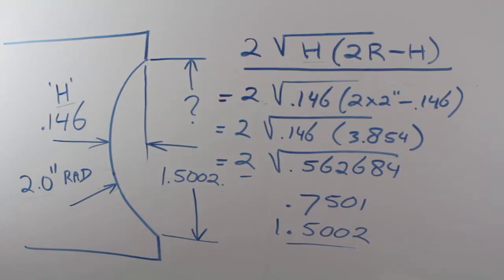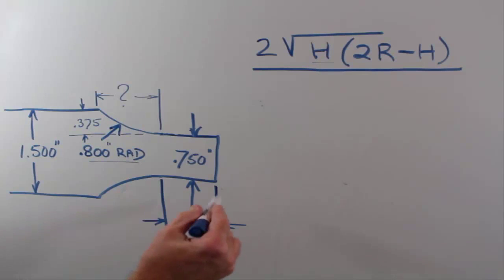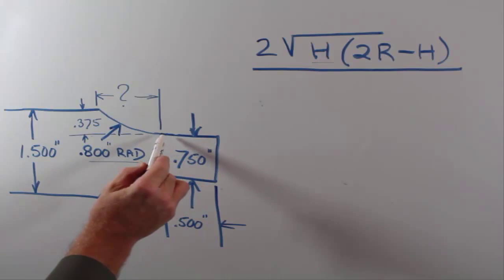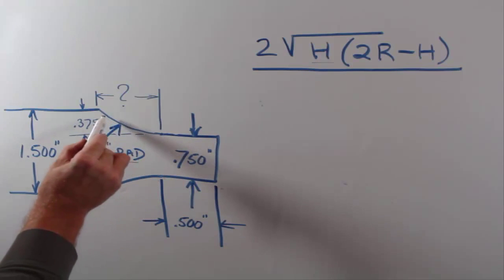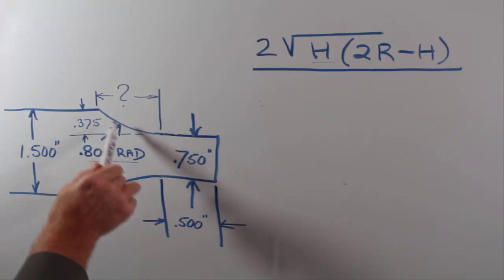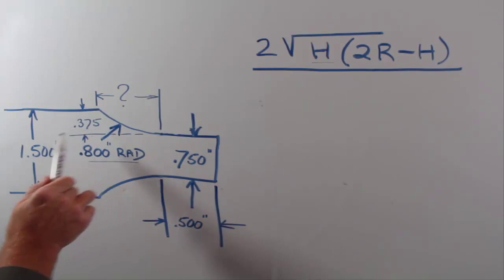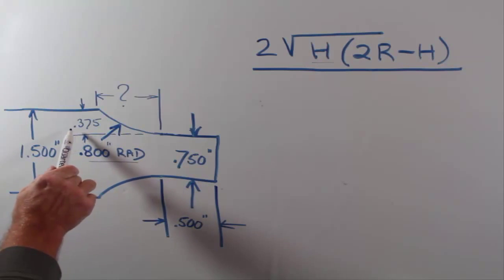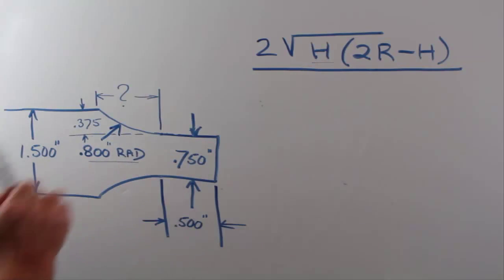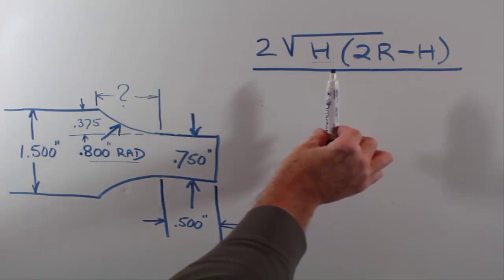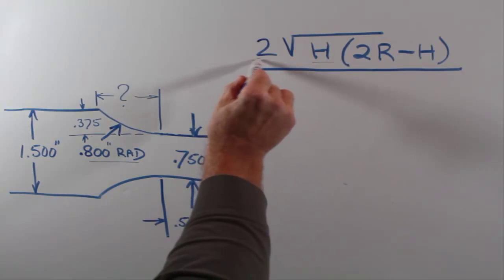Let me show you another use for this formula — turning a radius on the OD of a part. For this example, we're turning a part that starts with a 0.750" diameter in the front, then has an 0.800" radius coming up to a diameter of 1.500". The height of that radius is 0.375": we take 1.500" minus 0.750", divide by two, and get an H of 0.375".